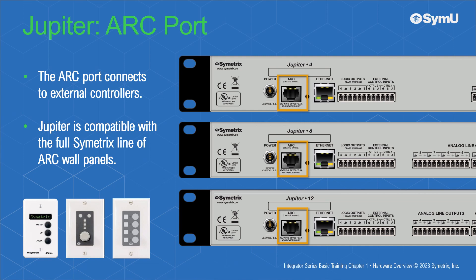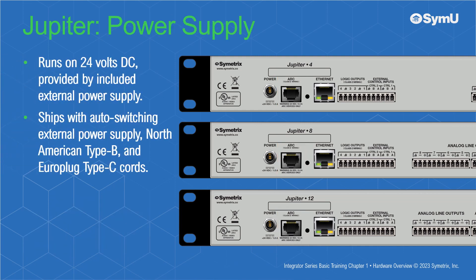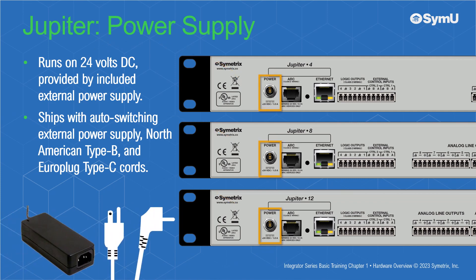We'll talk more about ARC control shortly. The Jupyter uses an agency approved 24 volts DC input power supply. It ships with an auto-switching, universal voltage external power supply with North American Type-B and Europlug Type-C cords. Additional cords may be provided by regional distributors.